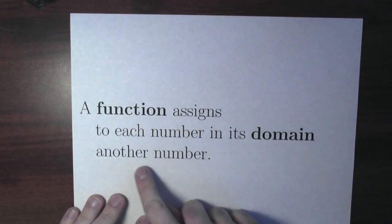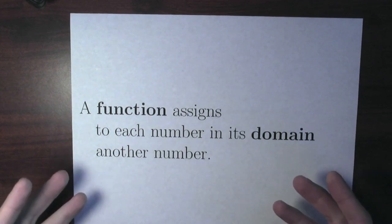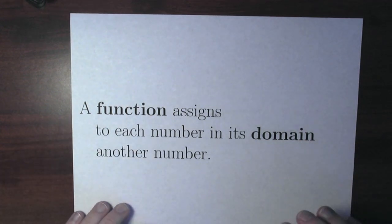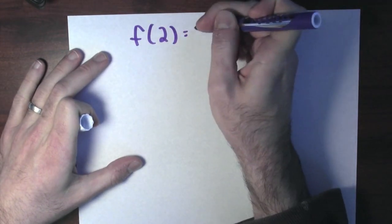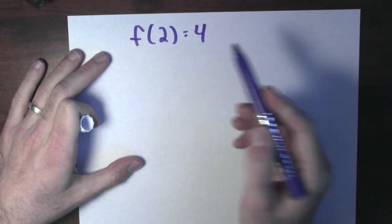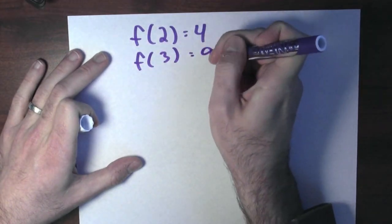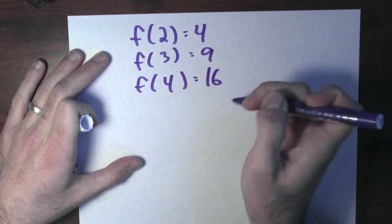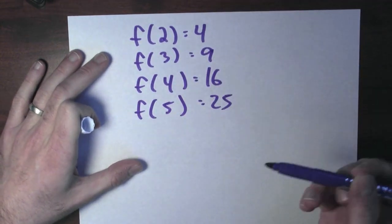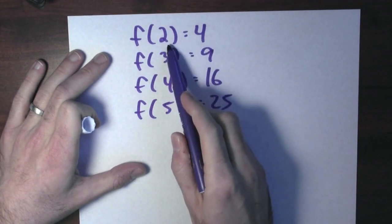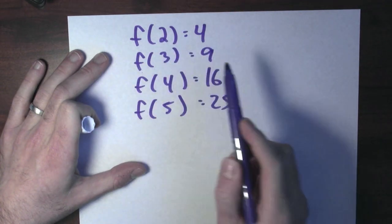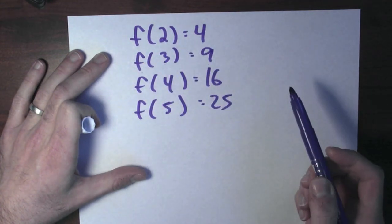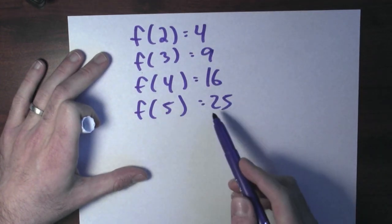A function assigns to each number in its domain another number. This definition doesn't say anything about how the function does that assignment. Let's see an example. Suppose I've got some function, I'll call it f — f for function. Maybe this function assigns to the number two the number four. So I'll write f of two is four, or f of three is nine, or f of four is 16, or f of five is 25. I'm just making this up — this is some function, and I'm telling you what number it assigns to each number.